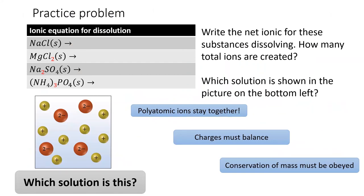Different salts dissociate into different numbers of ions upon dissolving. Try practicing this by writing the net ionic equation for each of these dissolution reactions. How many total ions are created from each one? Then look at the picture in the bottom left. Which of these possible salts could lead to that picture?